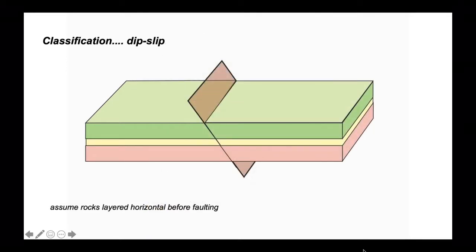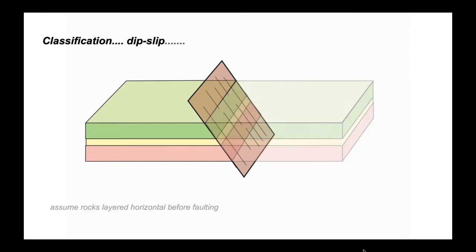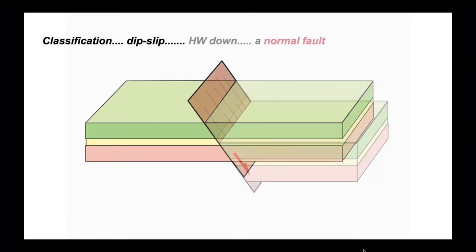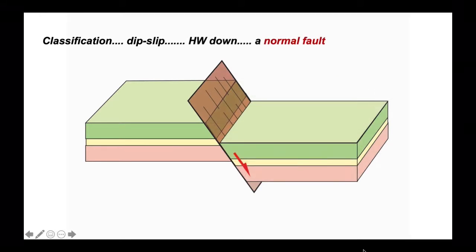Let's go to the alternative situation and this time we're going to move our hanging wall down. We're still going to move it down the dip of the fault plane. So here's our fault plane. Put the hanging wall back on and move it down the dip of the fault plane and this time the hanging walls down. We call these normal faults.